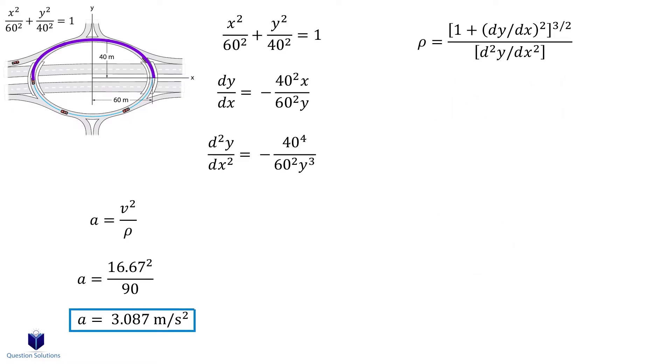Since this question is asking for the minimum acceleration felt, rho is 60 squared over 40. If it was asking for the maximum, it will be 40 squared over 60.